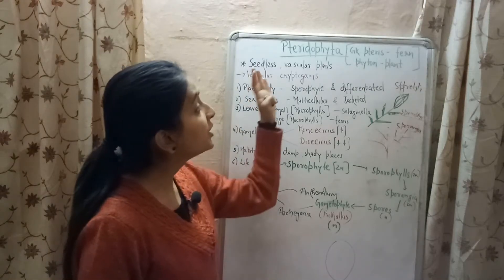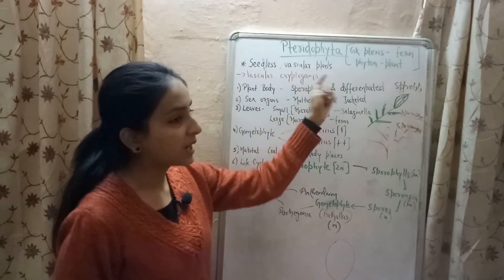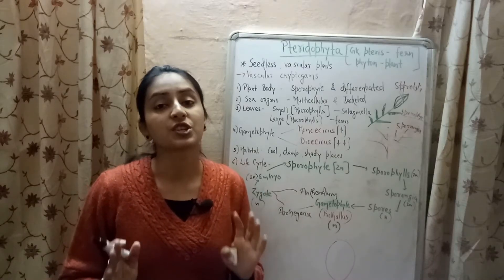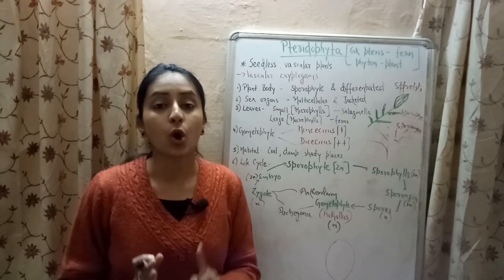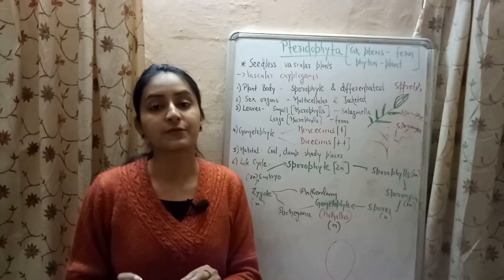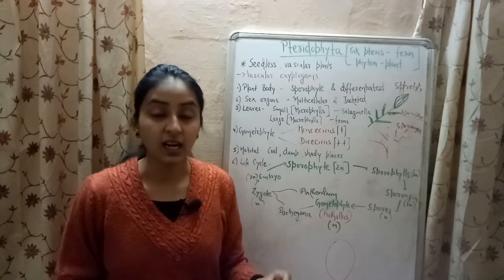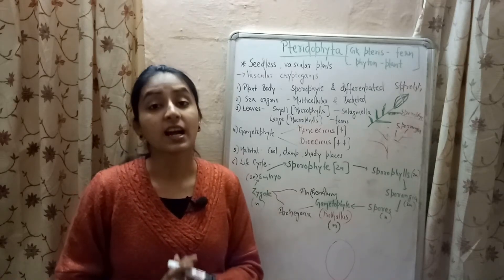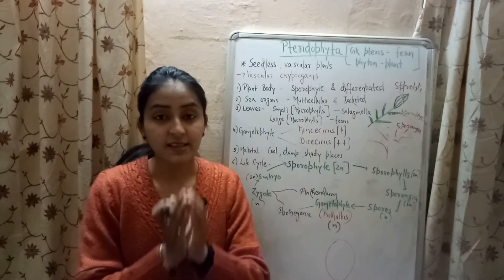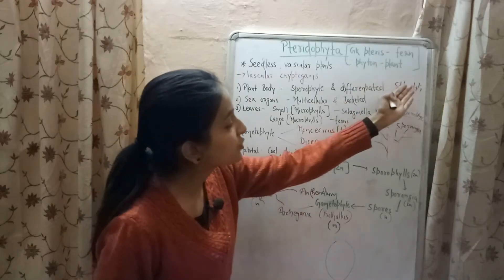Let's quickly revise everything. Pteridophyta is a division of seedless vascular plants, also known as vascular cryptogams. They have a well-differentiated plant body divided into roots, branches, stem, and leaves. Some leaves of pteridophyte plants contain a structure called sporangia, in which spores are present, and such leaves are known as sporophylls. Sporophylls in some cases combine together to form a cone-like structure called strobili.